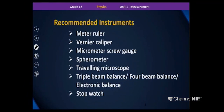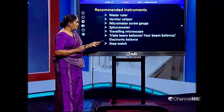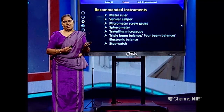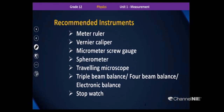To measure length we use the meter ruler, vernier caliper, micrometer screw gauge, spirometer, and the traveling microscope in the laboratory. When you want to take mass measurements you can use the triple beam balance, four beam balance, and the electronic balance. At the same time you can use the stopwatch to get time measurements accurately. These are the recommended instruments in the laboratory for the A level syllabus.